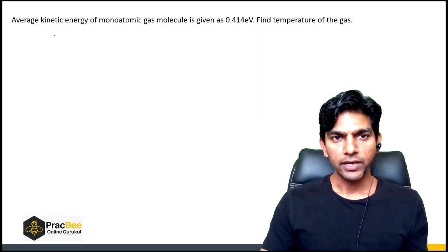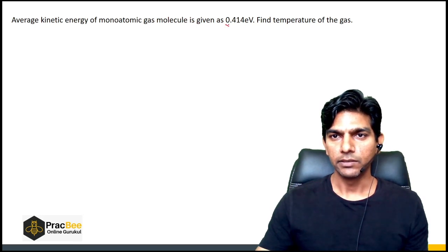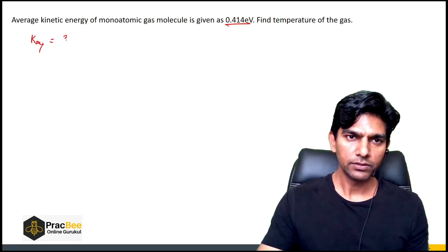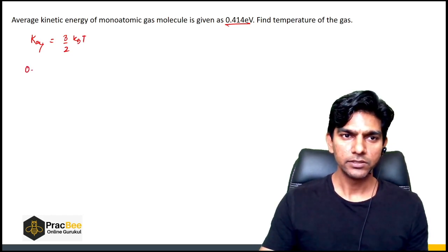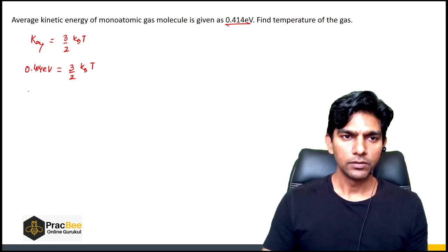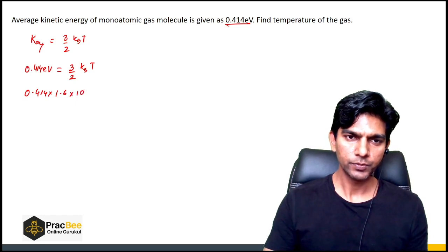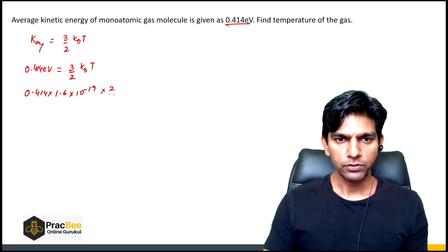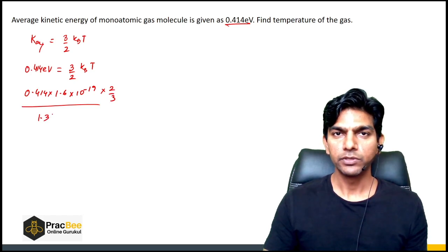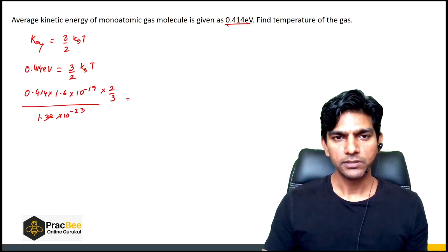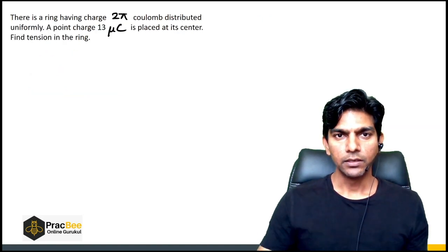Next: the average kinetic energy of a monatomic gas molecule is 0.414 eV. Find the temperature. We use the formula KE = (3/2)k_B T. Converting 0.414 eV to joules: 0.414 × 1.6×10⁻¹⁹ J. Then T = (2/3) × (0.414 × 1.6×10⁻¹⁹) / (1.38×10⁻²³), which gives us the temperature. Again a very straightforward question.